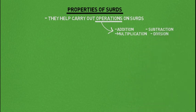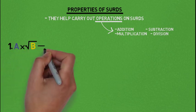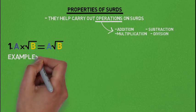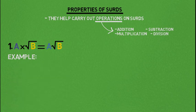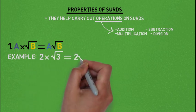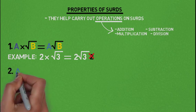Let's go to the first property of sets. A times root of B gives A root of B. A is any number multiplying the root of B to give A root of B, just like a number multiplying a variable. An example is 2 times root of 3, which gives us 2 root of 3. The number under the root sign is maintained, and the coefficient is always written in front of the root sign.